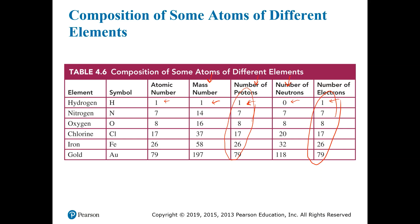For each of these atoms, the sum of the proton column and the neutron column gives you the mass number column. For example, 79 plus 118 equals 197, and 26 plus 32 equals 58. The numbers in the proton column are exactly equal to the atomic number, because the atomic number equals the number of protons.